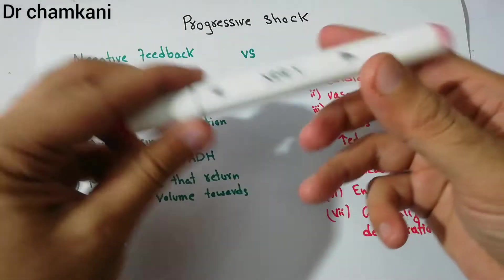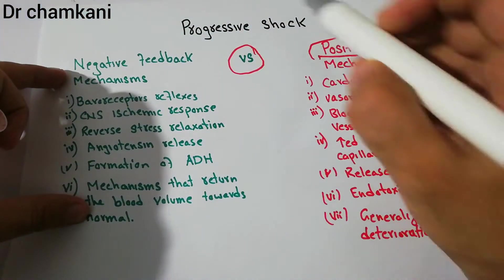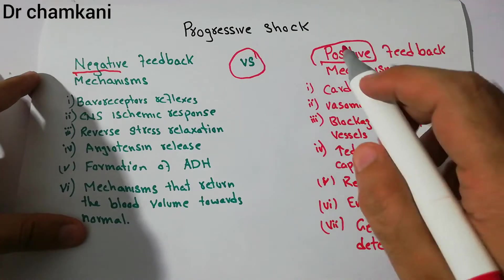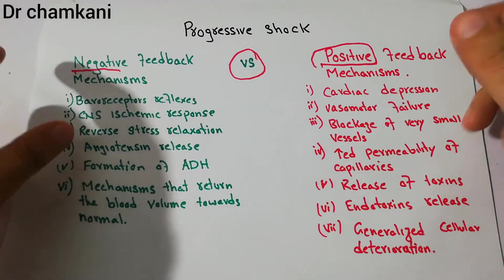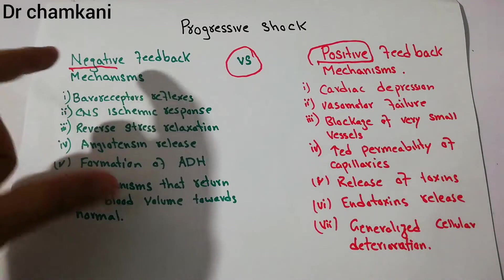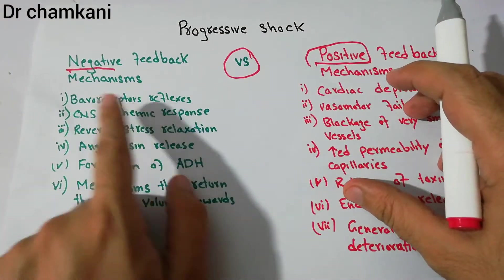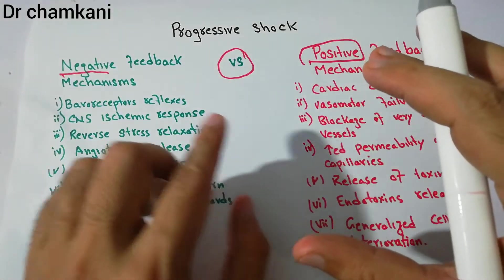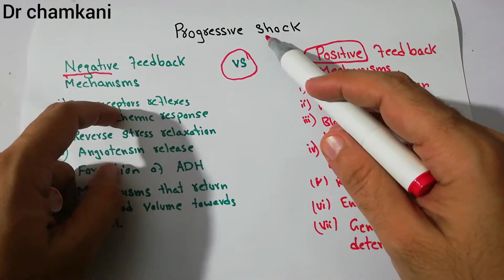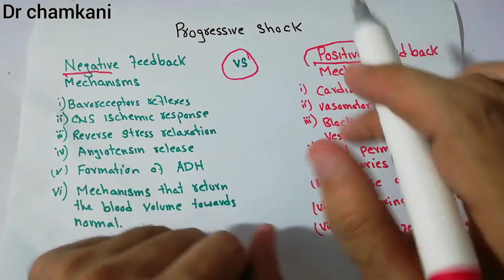There is a competition — a tug of war — going on between these positive and negative feedback mechanisms. Not every progressive shock will reach the irreversible stage. Depending on the severity of the positive feedback mechanisms and the response of the negative feedback mechanisms, if the shock is mild and the negative feedback mechanisms are strong — if the baroreceptor response and CNS ischemic response are good and timely — they will be able to reverse the shock, keeping it in the non-progressive stage.